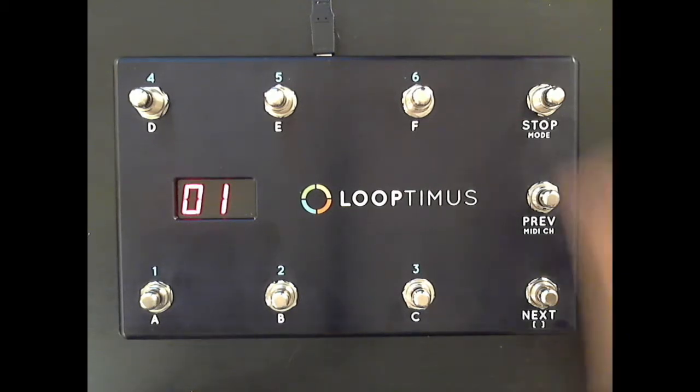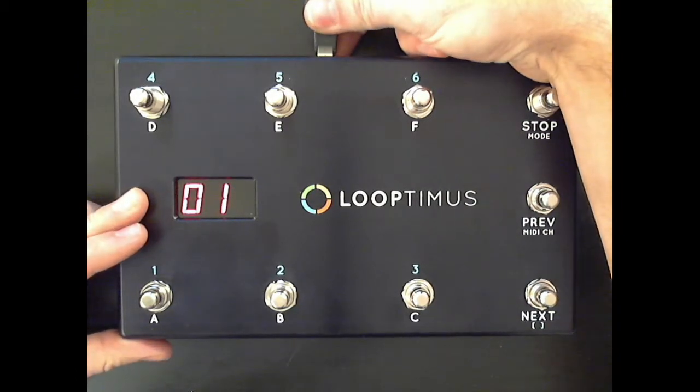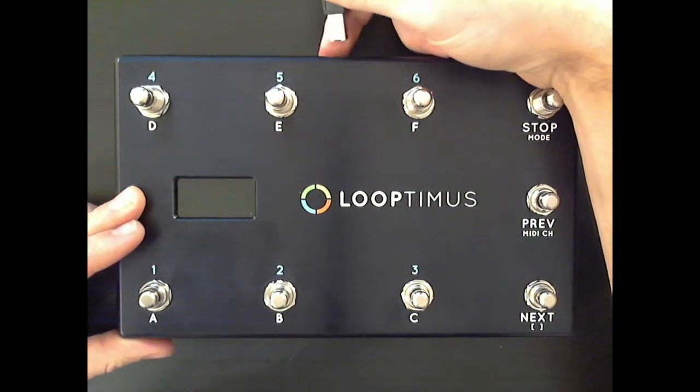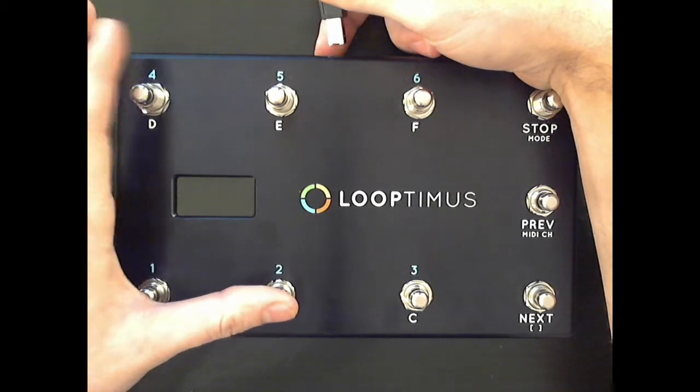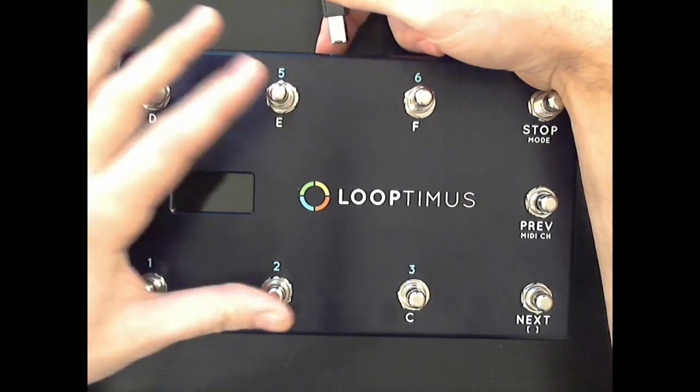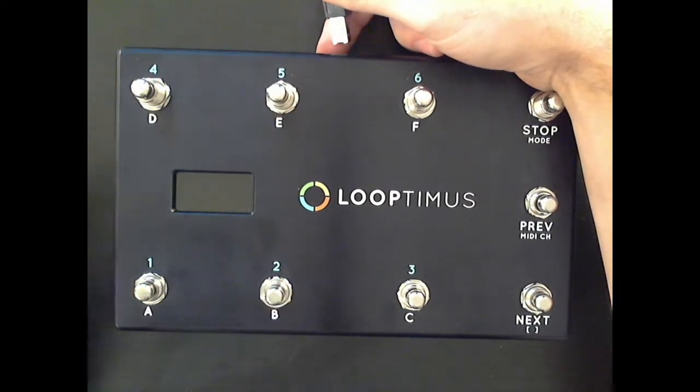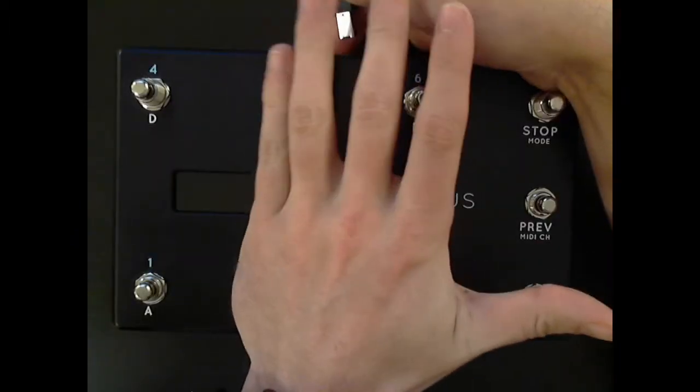The way to do that is power down Looptimus. And while you're powering it back up, you're going to hold down the B and the E buttons. Hold those down at the same time. I'm going to do it from this side just so you can see what happens.